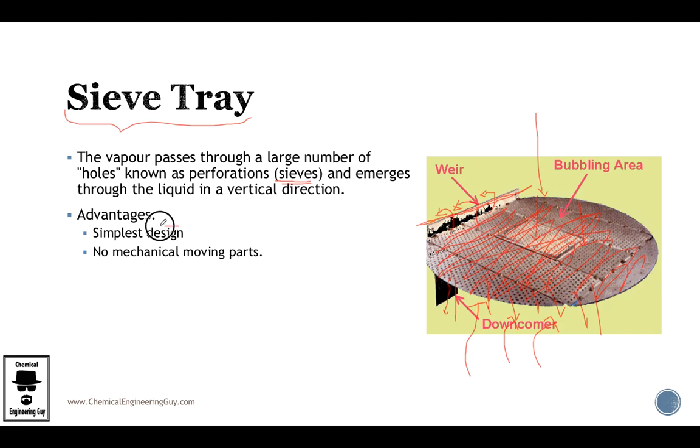The main advantage of the sieve tray is the simple design—you just need to perforate the tray. There are no mechanical moving parts, so it will not break, and you will not need to substitute moving parts. Also, it's relatively cheap compared to other trays.